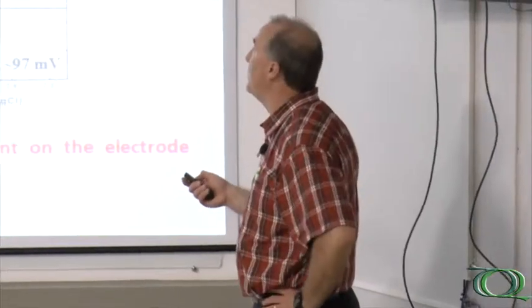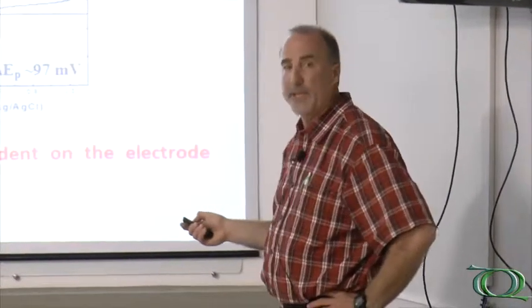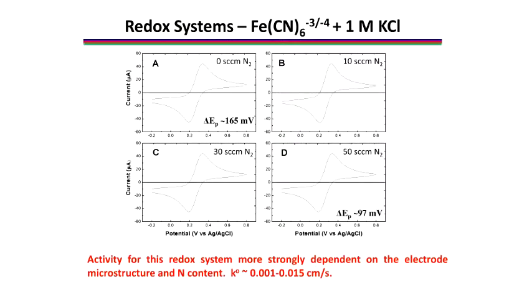We can look at another one. This is an iron three, iron two, the ferrocyanide couple here. This one is quite a bit more sensitive to the condition of each electrode. I'm showing you data for no nitrogen, 10 SCCM nitrogen, 30 and 50. Each of these films has more nitrogen added to the lattice, and you can see that the peak splitting for this system is somewhat sluggish, the kinetics to start with, increases a little bit, still sluggish, but increases some as we add nitrogen to the film. This particular redox system is quite sensitive to the chemistry of the material, the electronic properties, as well as the microstructure.